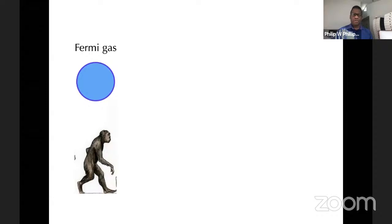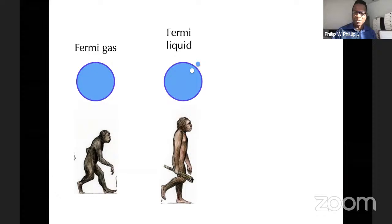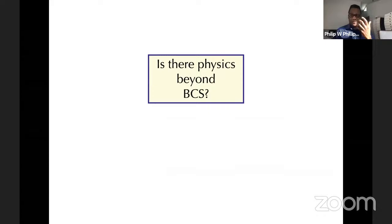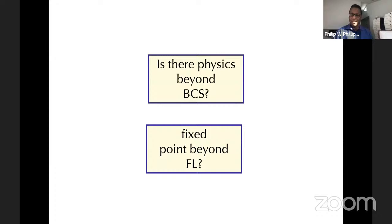So let's look at where BCS put us. We start with the Fermi gas, Fermi liquid; BCS tells us that we turn on this interaction and this whole thing condenses. The question I ask is: is there anything else in this evolutionary process? Is there physics beyond BCS? If there is, there has to be some type of fixed point that is beyond Fermi liquid theory.